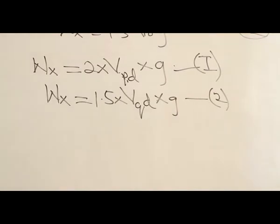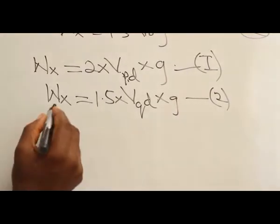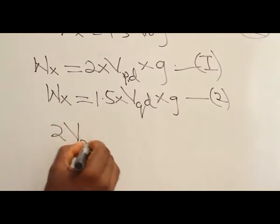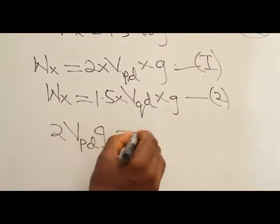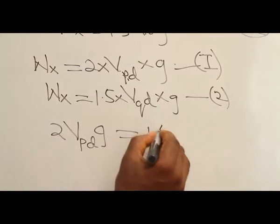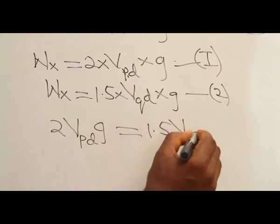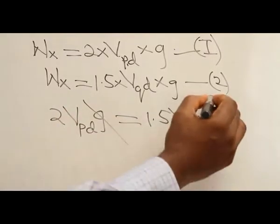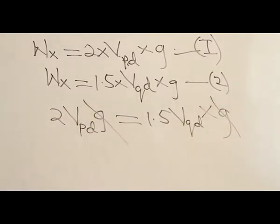If I compare equations 1 and 2, it then means that 2 times volume of P displaced times G equals 1.5 times volume of Q displaced times G. Acceleration due to gravity cancels on both sides.